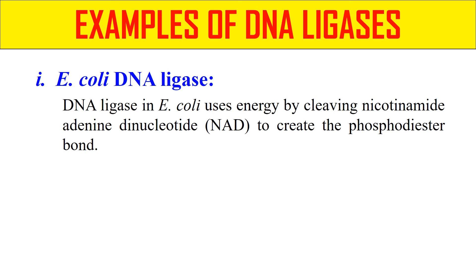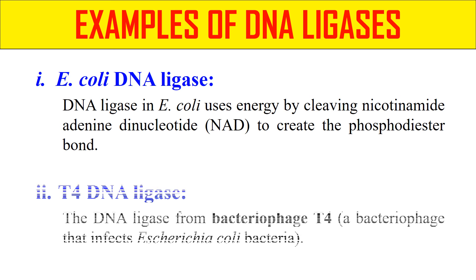Now let us discuss some examples of DNA ligases. In the case of prokaryotes, the E. coli DNA ligase is encoded by the lig gene. This E. coli DNA ligase uses energy by breaking nicotinamide adenine dinucleotide (NAD). The next example is T4 DNA ligase, which is present in bacteriophage T4 and is most commonly used in laboratory research. It can ligate either cohesive or blunt ends of DNA, unlike E. coli DNA ligase. T4 DNA ligase cannot use NAD but uses ATP as a cofactor and energy donor for making the phosphodiester bond.